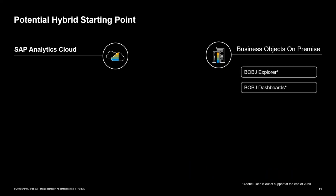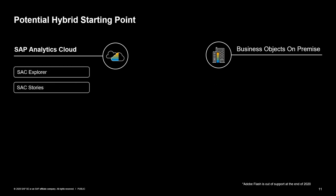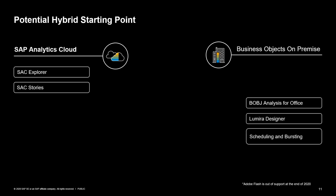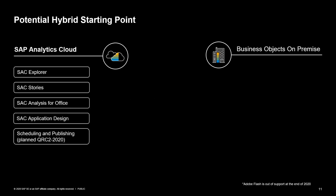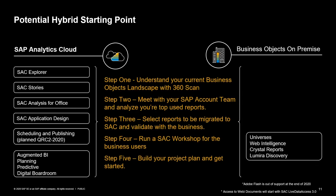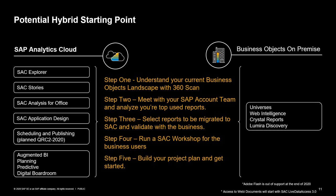Here are potential starting points for your cloud journey. Business Objects Explorer and Dashboards are now SAC Explorer and SAC Stories — if you're using Explorer today on-premise, you're aware of its maintenance end-of-life, so starting a project to move those workloads to SAC is a great place to begin. BOE Analysis for Office, Lumira Designer, and scheduling capabilities are now SAC Analysis for Office, SAC Application Design, with scheduling and publishing planned for release in Q2.